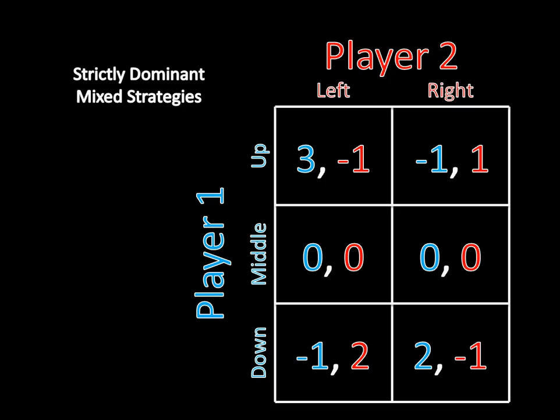The game we're going to be looking at today is this one right here. Player 1 has three strategies: up, middle, and down. Player 2 has two strategies: left and right. If you'd like to, as an exercise for yourself, you can pause the video right now and verify what I'm about to say — there is no pure strategy that strictly dominates another pure strategy in this game. So if we're just using iterated elimination of strictly dominated strategies, looking only at pure strategies, we couldn't do a thing to this game.